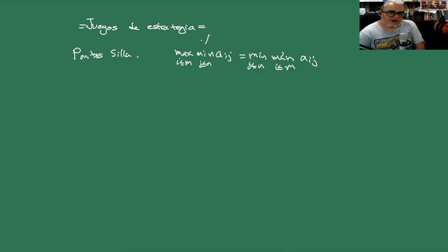Y si estos dos, este es lo mejor que le puede ir al azul que escoge primero y este es lo mejor que le puede, lo menos peor que le puede ir al rojo que es el que escoge después. Entonces, cuando tenemos un punto silla, tenemos esta situación que vamos a llamarle a i estrella j estrella.